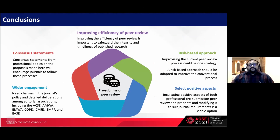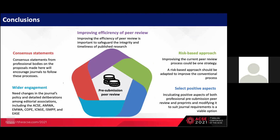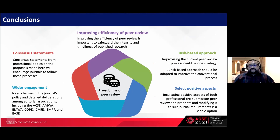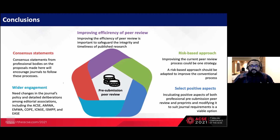To conclude, improving the efficiency of peer review is important to safeguard the integrity and timeliness of published research. We need to take a risk-based approach to improve conventional peer review, inculcating positive aspects of both professional pre-submission peer review and preprints, modified to suit journal requirements. This is not easy to implement — it requires wider engagement, changes in journal policy, and detailed deliberations among editorial associations including the Asian Council of Science Editors, AMV, EMVA, COOP, ICMJ, ISMAP, and others. Consensus statements from these professional bodies will encourage journals to follow these processes and reduce the burden on the peer review system.